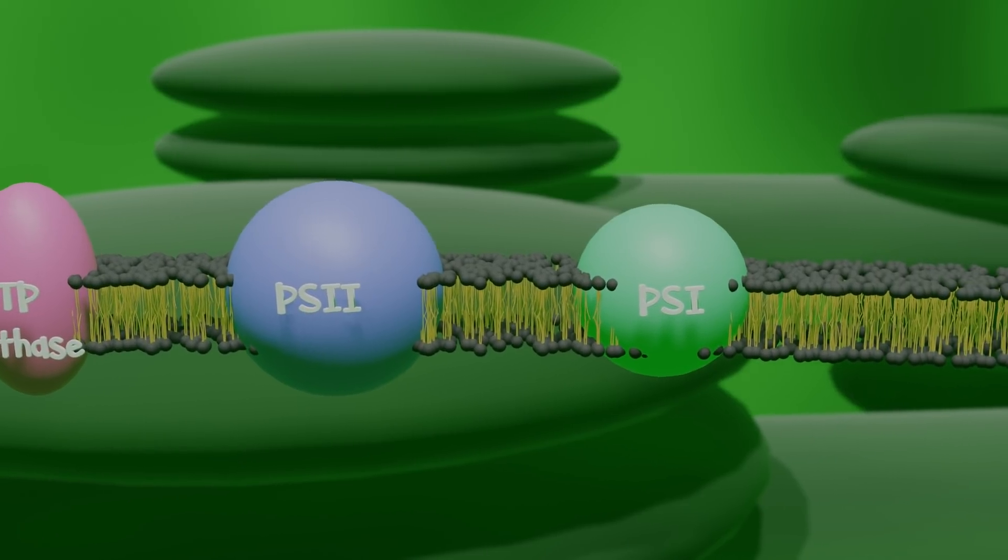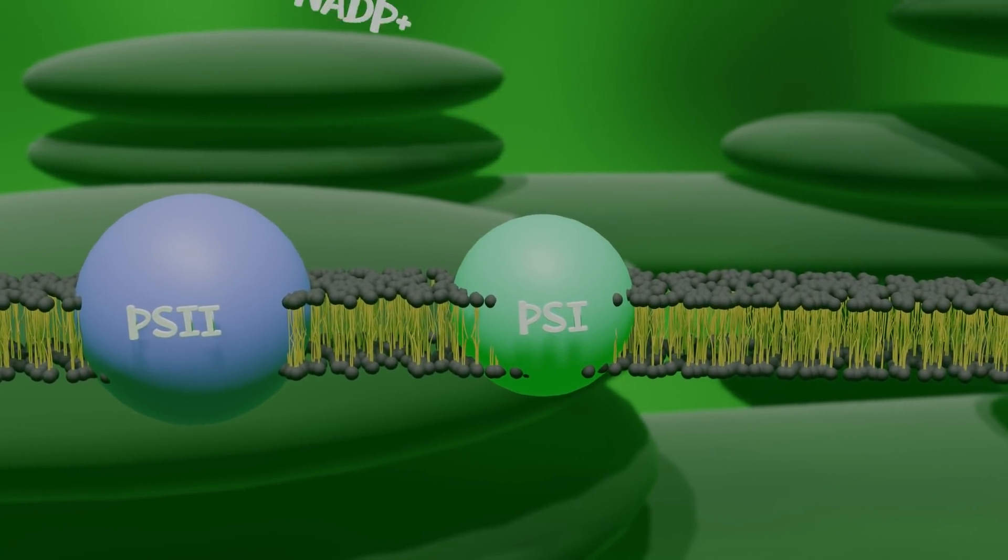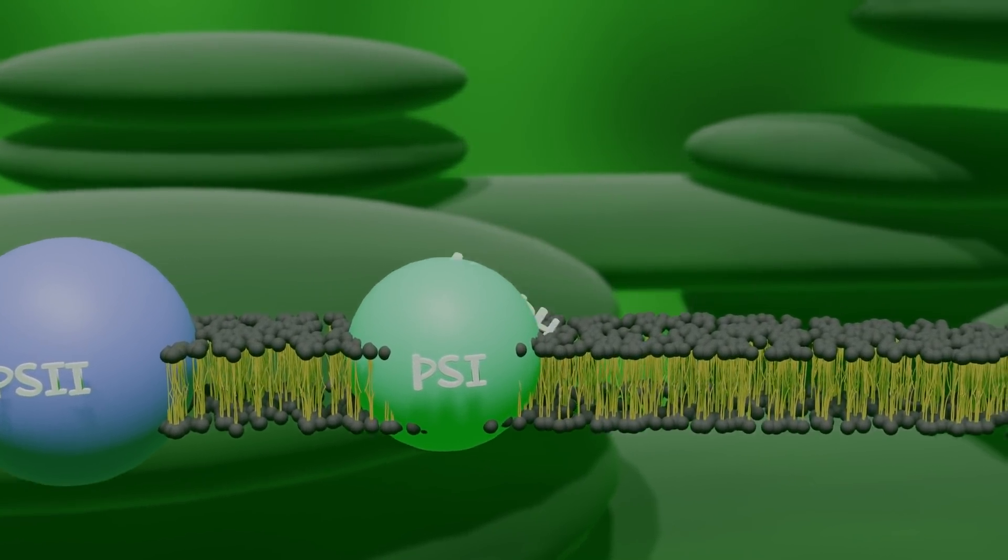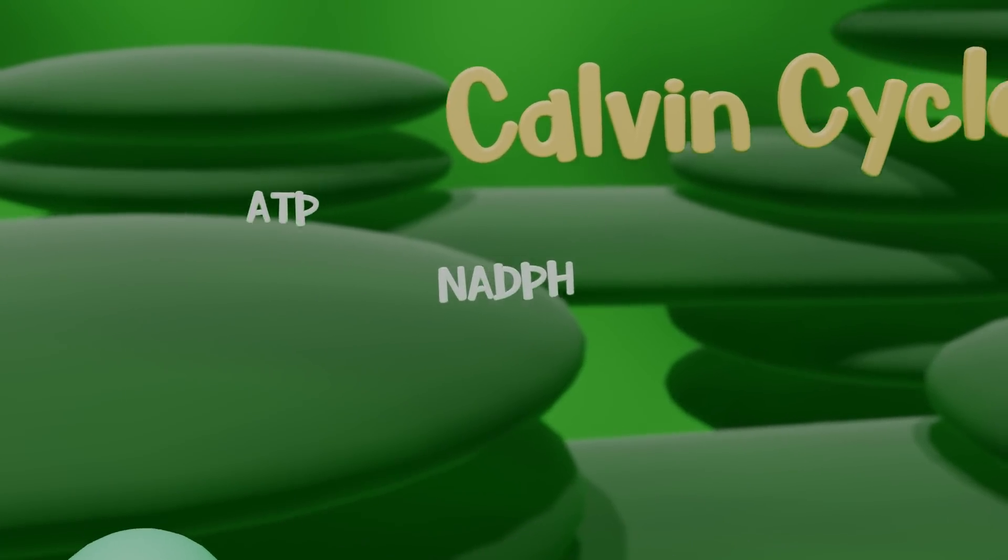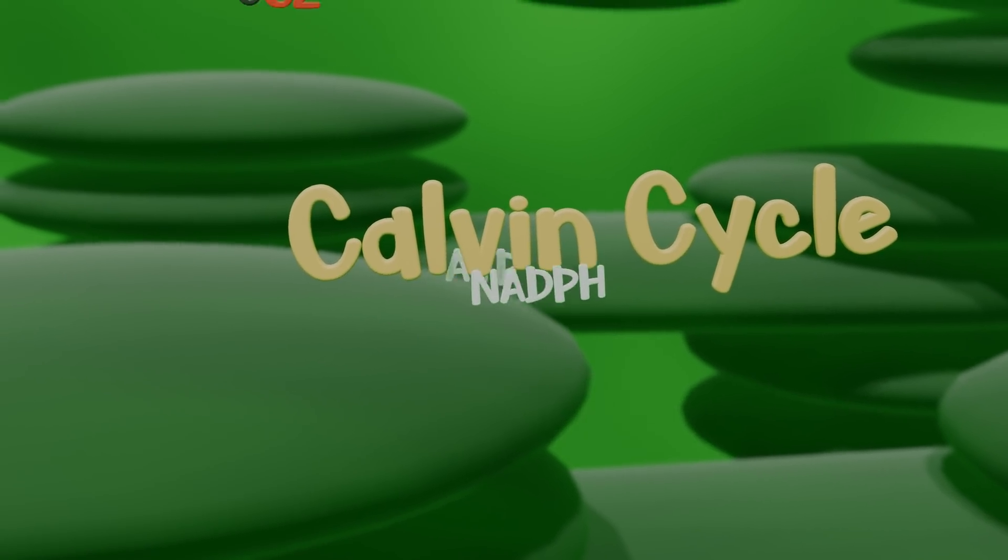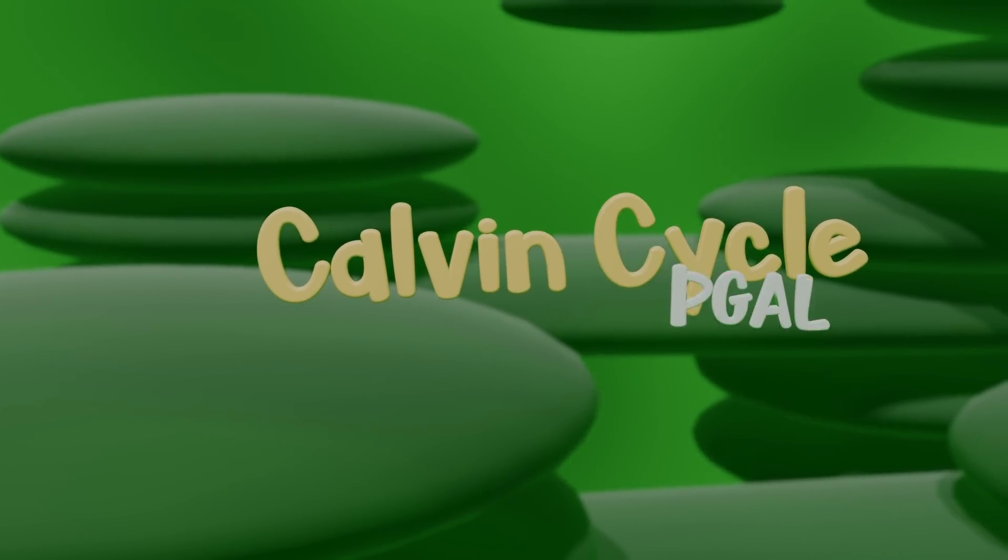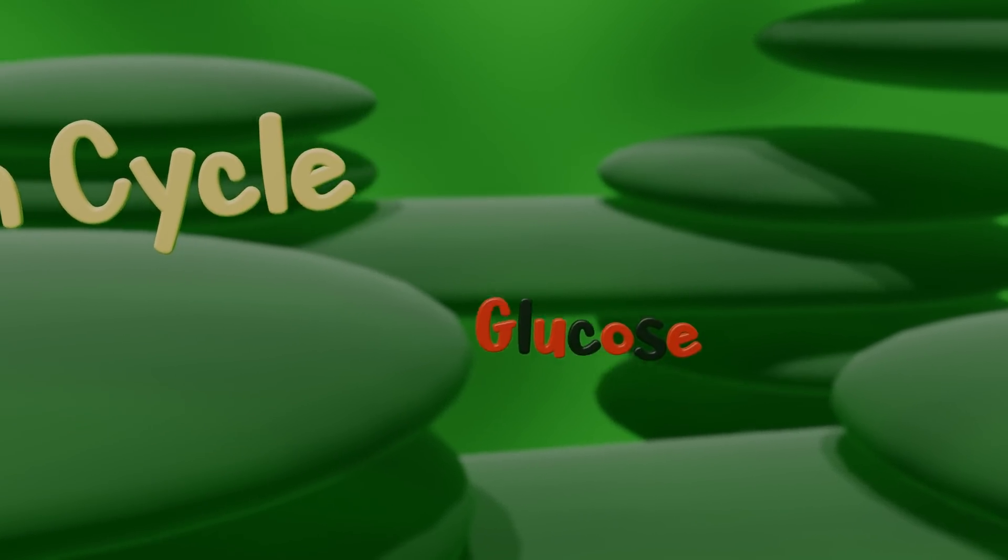Photosystem I frees electrons that are used to reduce NADP-positive into NADPH. ATP and NADPH are then used as sources of energy to convert carbon dioxide into sugars in what we call the Calvin cycle.